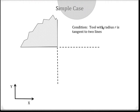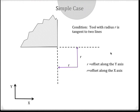Our condition here is the tool with radius R is tangent to the two dashed lines. If it's tangent, then it is offset from those two lines, which represent the y and x axis offset. So we know exactly where the tool is — if we know this corner point, we just have to add R in x and subtract R in y and we know the location of the tool.